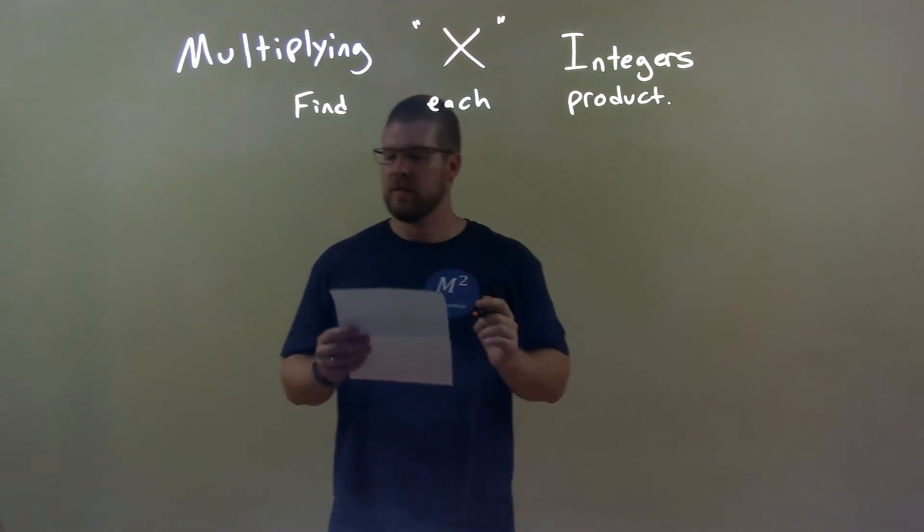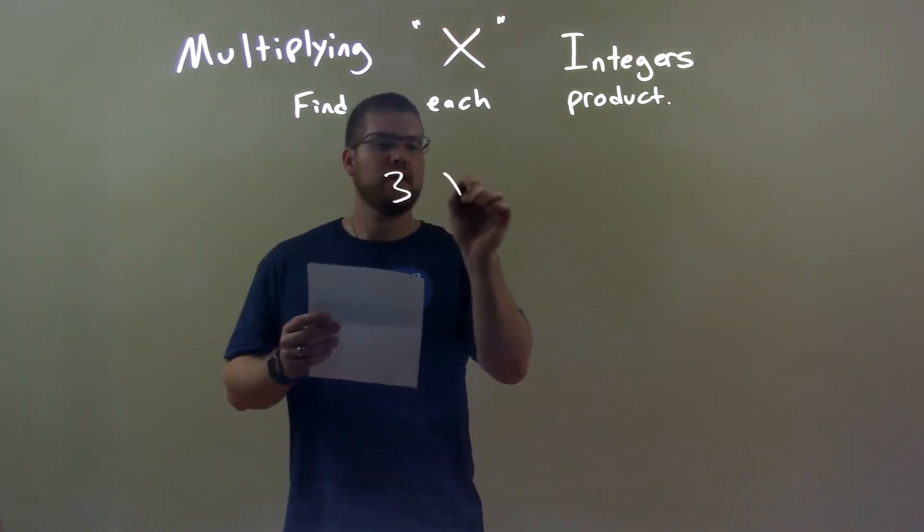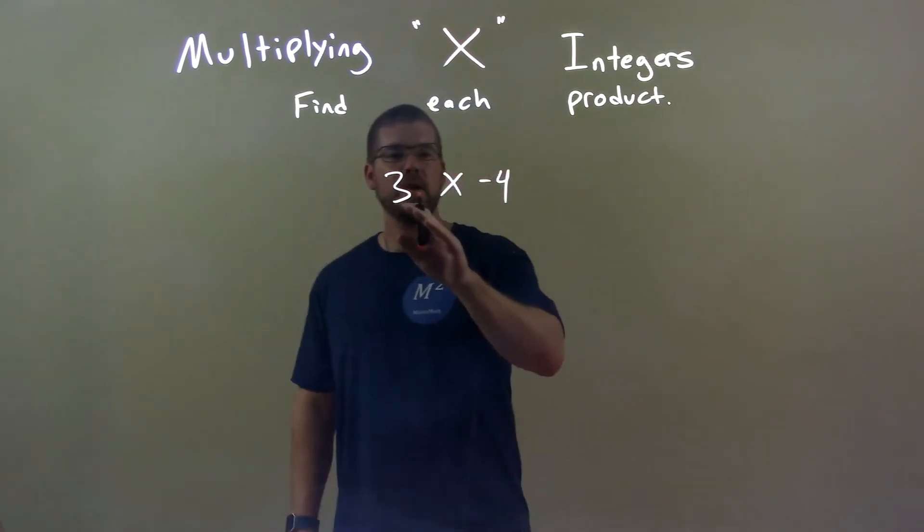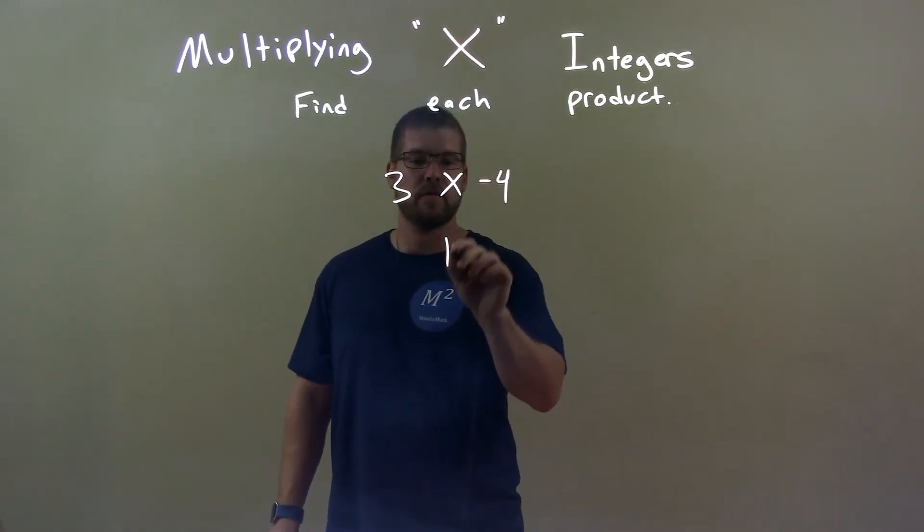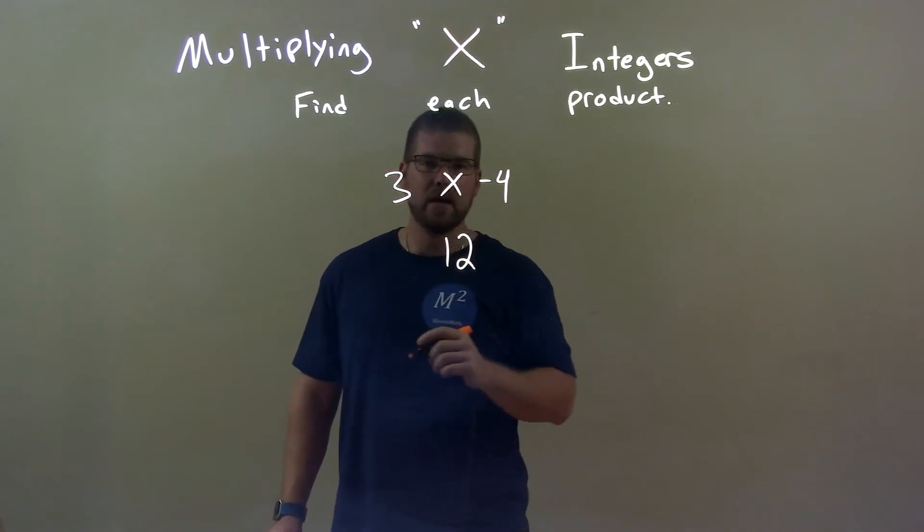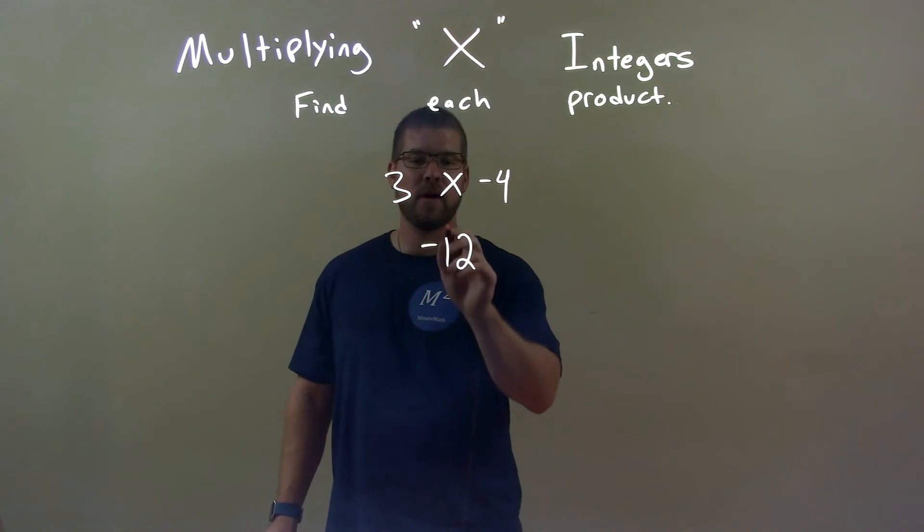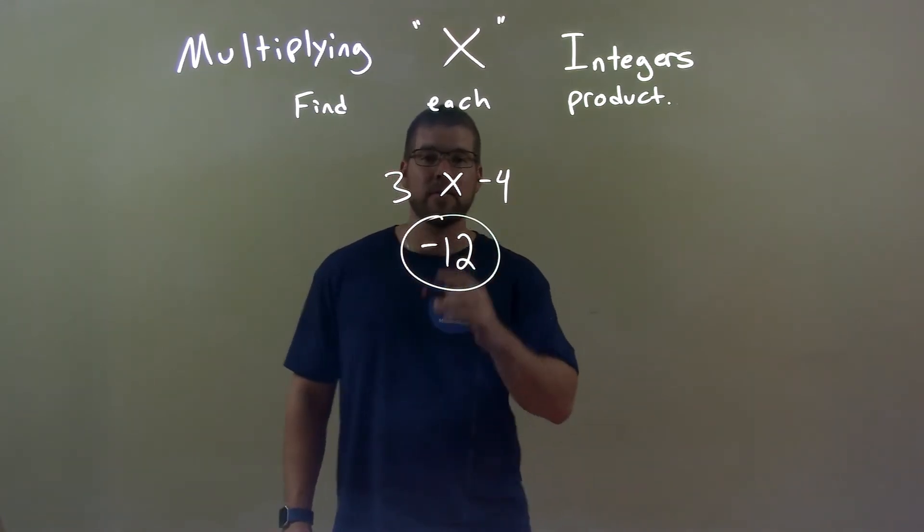If I was given these integers, 3 times negative 4, we know that 3 times positive 4 is 12. A positive times a negative is always negative, so we combine those two facts to get our final answer of negative 12.